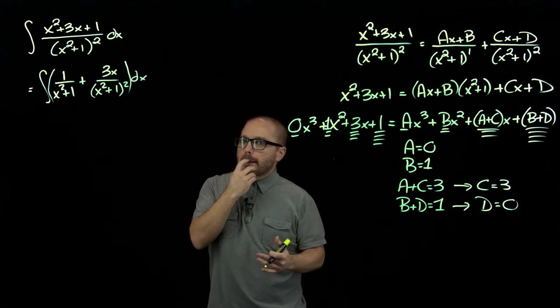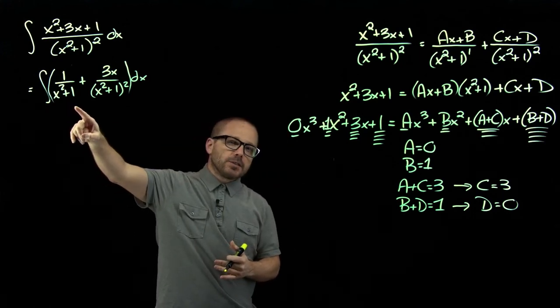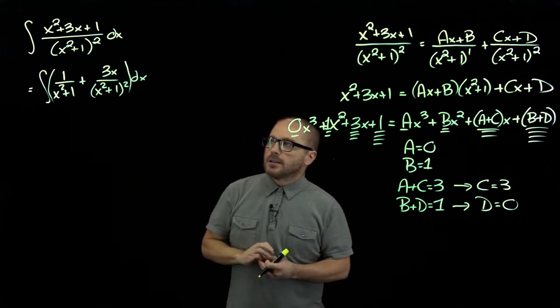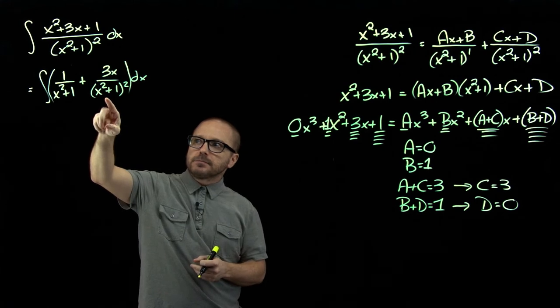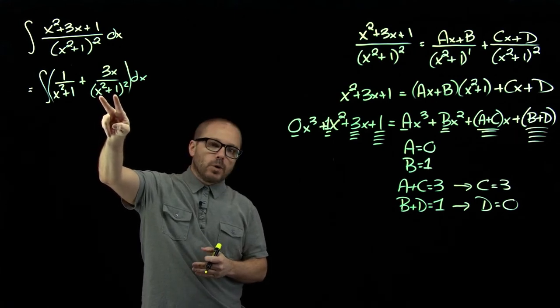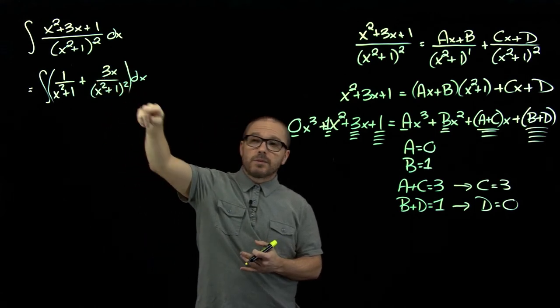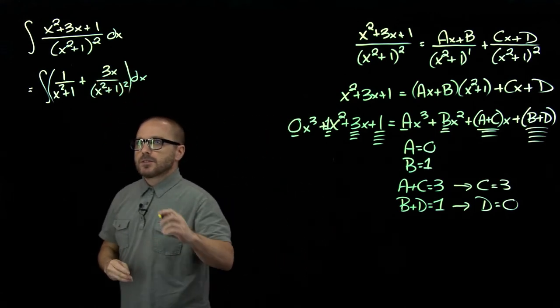Now, we just need to integrate. Recall that that first expression, that's the derivative of tan inverse. So we know the antiderivative there. And this one, we've got x squared plus one, its derivative is two x, which is a multiple of three x. So we've got a u sub we could do there.